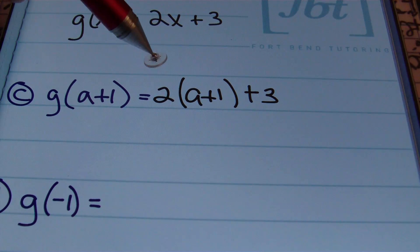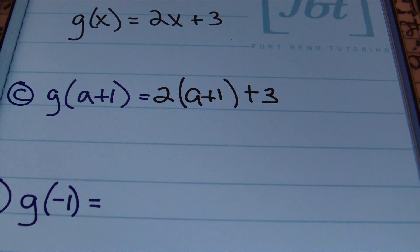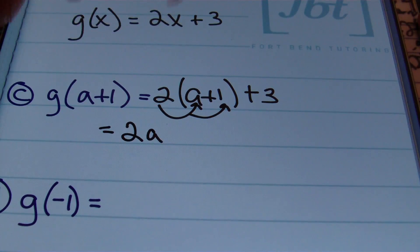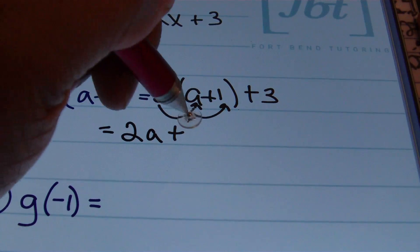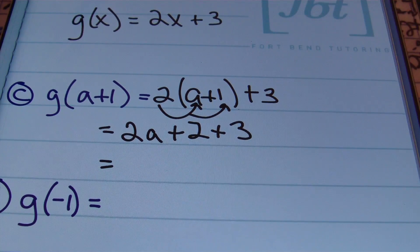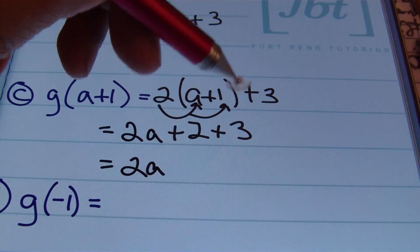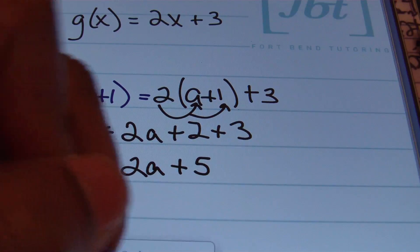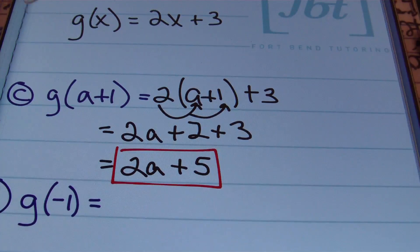I see a 2 on the outside of a set of parentheses — that's the distributive property. So I'm going to distribute: 2 times a is 2a, and 2 times 1 is positive 2. Then I bring down the positive 3. Combining like terms: 2a stays by itself, and positive 2 plus positive 3 gives us 5. So the result of part 1c is 2a plus 5.